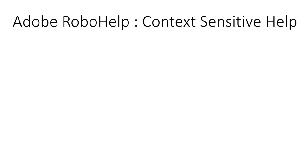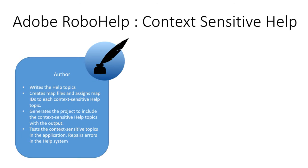In order to build context-sensitive help, there are two parties required. The first one is the author — the person who builds the documentation and also builds the map files. Map files hold information related to what topic should open up when users are trying to access a particular feature. The author also generates the context-sensitive help and tests it so that any errors can be repaired or the correct map IDs assigned.